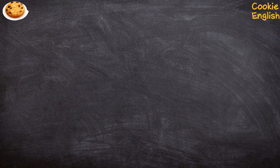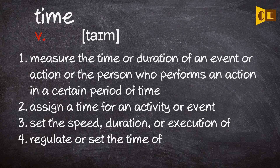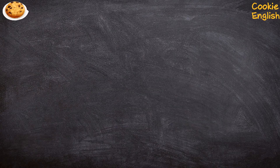5. Verb. 1. Measure the time or duration of an event or action, or the person who performs an action in a certain period of time. 2. Assign a time for an activity or event. 3. Set the speed, duration, or execution of. 4. Regulate or set the time of.